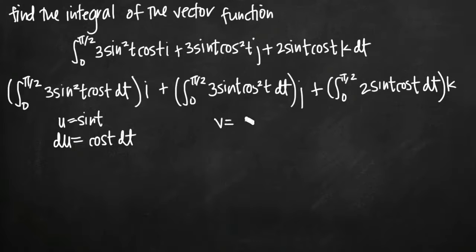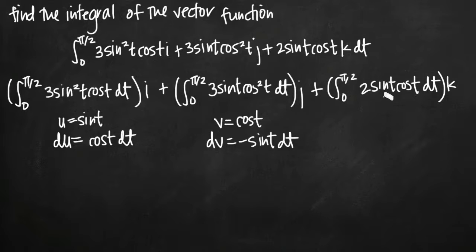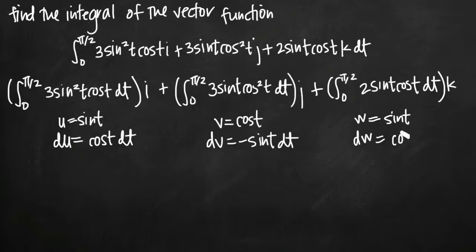For the j integral, we'll do a v substitution: v equals cosine of t, and dv equals negative sine t dt. For the k integral, we'll do a w substitution: w equals sine of t, and dw equals cosine t dt.